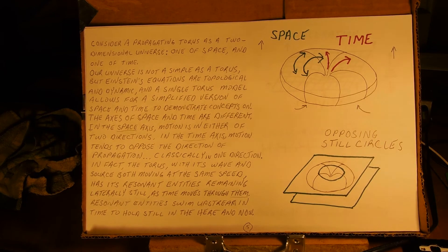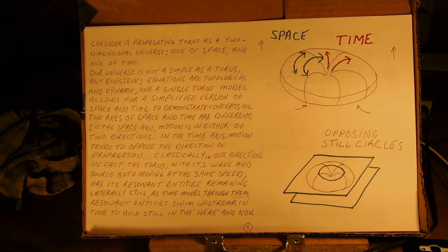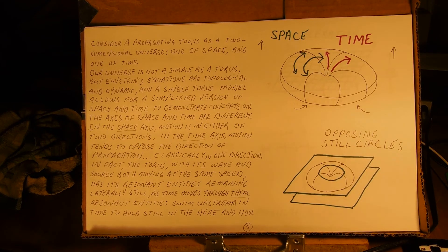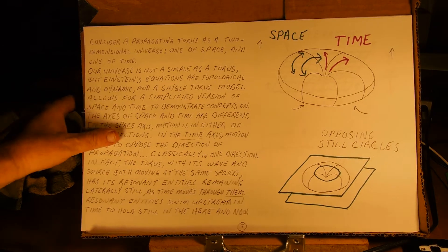The axes of space and time are different. In the space axis, motion is in either of two directions. In the time axis, motion tends to oppose the direction of propagation — classically in one direction. In fact, the torus, with its wave and source both moving at the same speed, has its resonant entities remaining laterally still as time moves through them. Resonant energies swim upstream in time to hold still in the here and now.